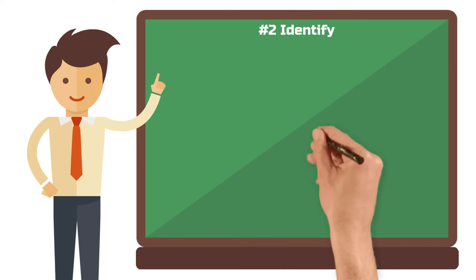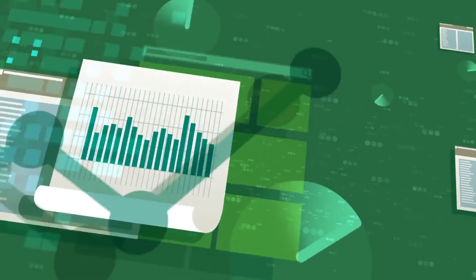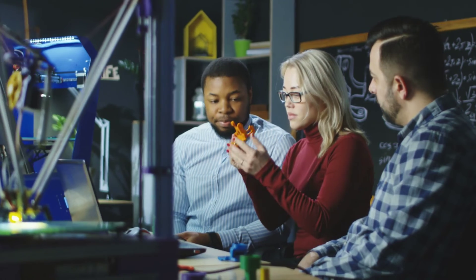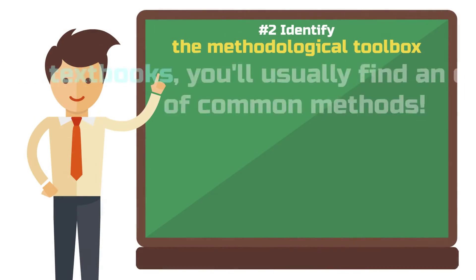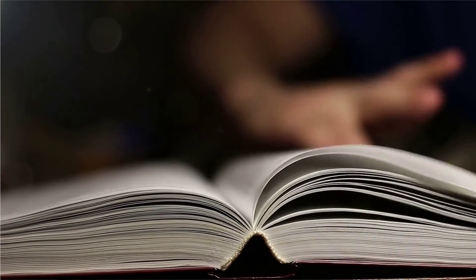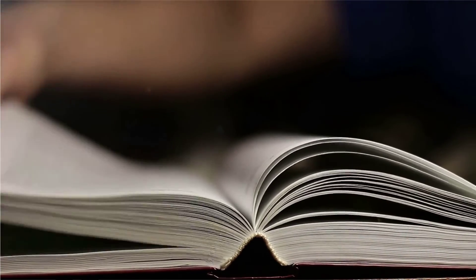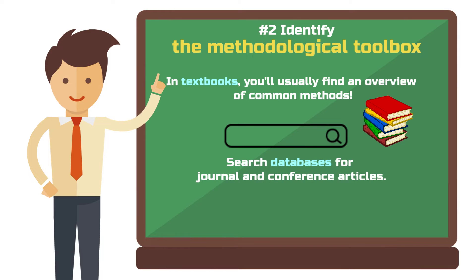Step 2: identify the methodological toolbox of your discipline. To decide which methods to use in your next project, you need to find out which methods are common in the disciplines that inform your studies. It makes little sense to develop new methods or question the entire discipline as a student — you just need to discover what is already in the toolbox. The quickest way is through textbooks, which can be useful for gaining an overview as a newbie. You can also search databases for journal and conference articles to see which methods are used in current research in that field.